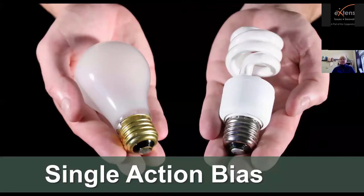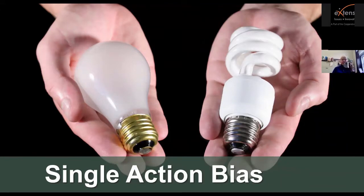The next is single action bias. I use the image of light bulbs as an example — about 10 to 15 years ago, we were all given the message that if we just changed our light bulbs, we could prevent climate change. That's not all you have to do. A lot of us will change the light bulbs or maybe recycle, but we don't necessarily change other behaviors that lead to a better climate.